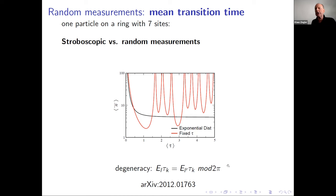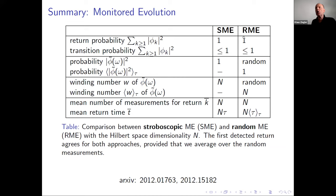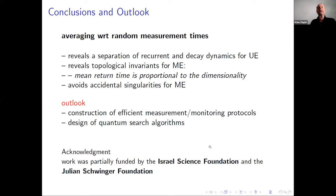Let me come to the conclusion. Averaging over random measurement times reveals the separation of recurrent and decay dynamics for unitary evolution and reveals topological invariants for monitored evolution. The mean return time is proportional to the dimensionality of the Hilbert space, which is important for experiments. It avoids accidental singularities. The outlook is construction of efficient measurement monitoring protocols and design of quantum search algorithms to optimize the search time. Thank you for your attention.